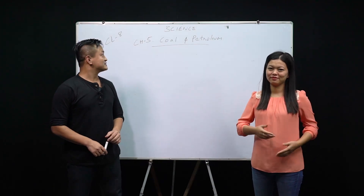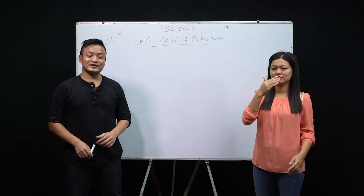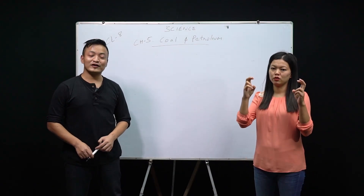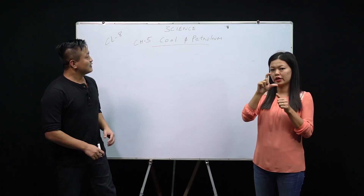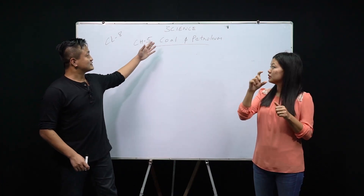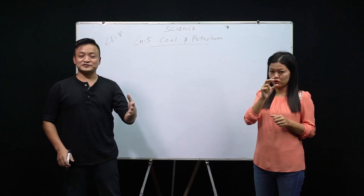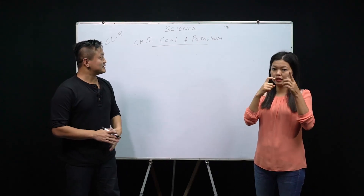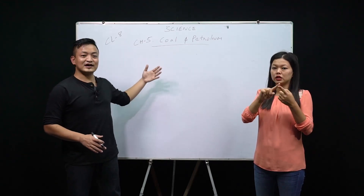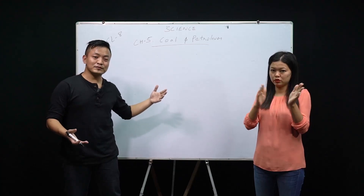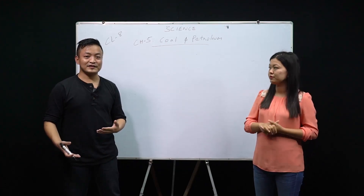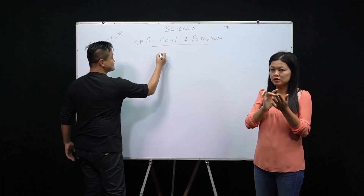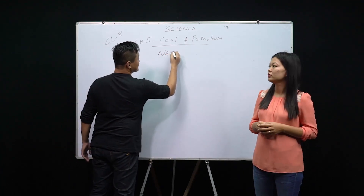Welcome back, Class 8 students. We'll start with a new chapter today — Chapter 5: Coal and Petroleum. Coal and petroleum are very useful to us, so we are going to discuss in detail how they are formed and where they are used. First, we'll start with natural resources.